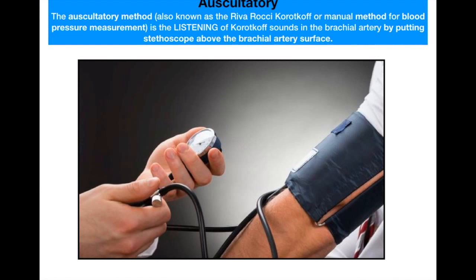The next method is the auscultatory method, also known as the Riva-Rocci or manual method for blood pressure measurement. It involves listening to the Korotkoff sounds in the brachial artery by placing a stethoscope above the brachial artery surface.